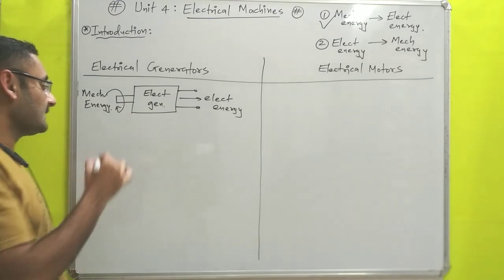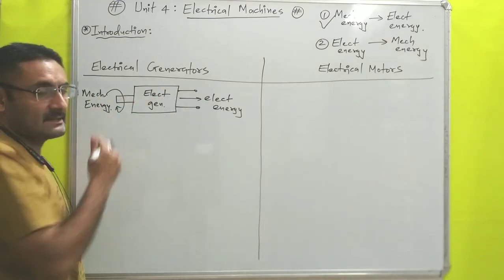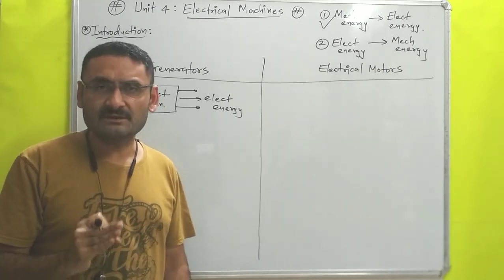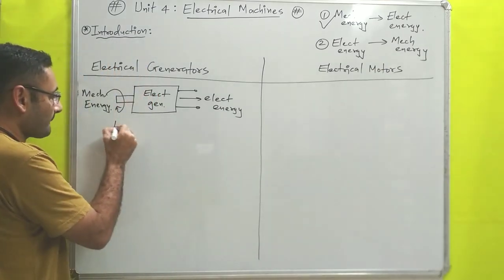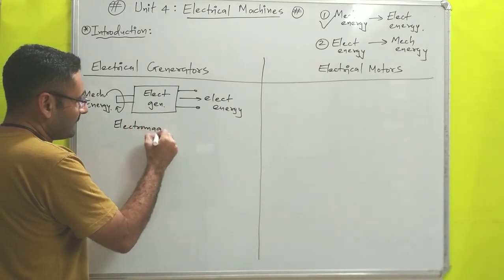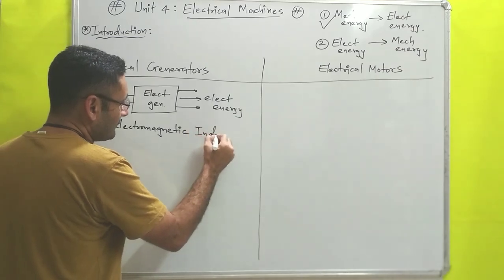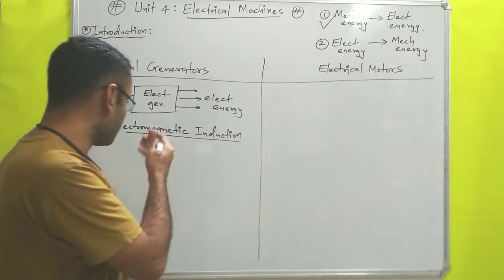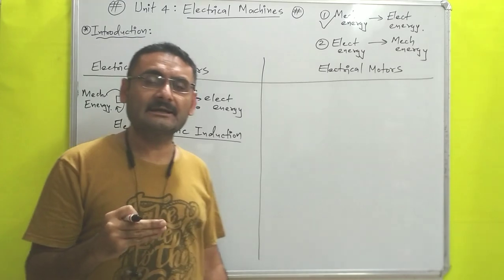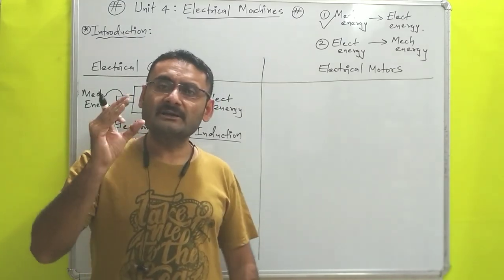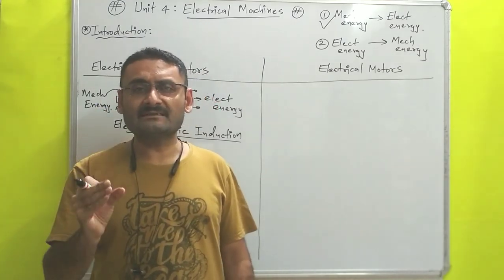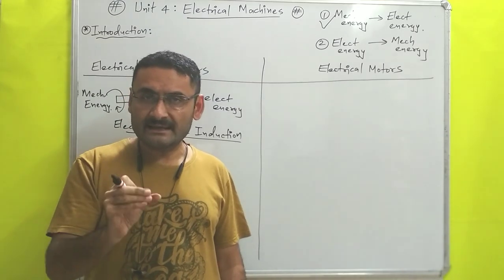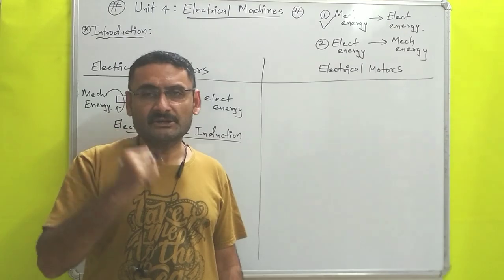A question may arise: how is the electrical generator converting mechanical energy into electrical energy? The answer is based on one principle which is known as electromagnetic induction. Electromagnetic induction says that whenever a conducting wire, conducting coil, or copper coil moves inside a magnetic field, then current is induced inside the wire.